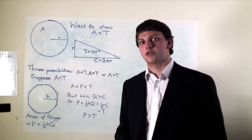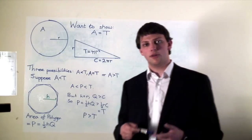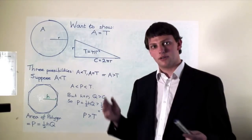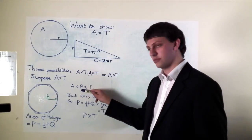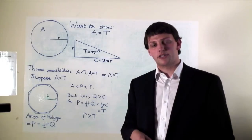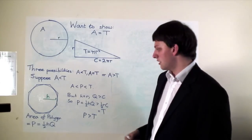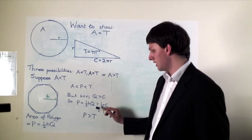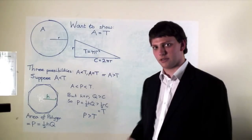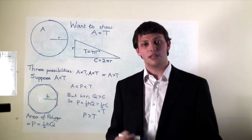Suppose the circle is smaller than the triangle. We draw polygons around the outside of the circle, and as we increase the number of sides, the polygon's area gets closer and closer to the circle's area, until we get a polygon whose area sits between the circle's area and the triangle's area: so circle area < polygon area < triangle area. But the height h of this circumscribed polygon equals the circle's radius r, and the polygon's perimeter q is bigger than the circle's circumference c. So the polygon's area — half times h times q — is bigger than half times r times c, which is the triangle's area. The polygon is bigger than the triangle, but we said it was smaller. This is impossible, so this case can't happen.